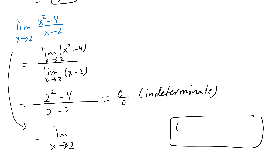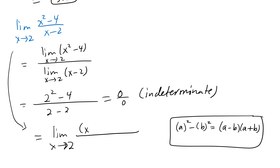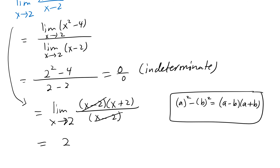We recall the factoring formula: the difference of squares a² − b² equals (a − b)(a + b). Applying this to the top gives (x − 2)(x + 2), keeping the denominator the same. The (x − 2) factors cancel out, and then passing the limit you get 2 + 2, which is 4. That gets rid of the 0 over 0 form.